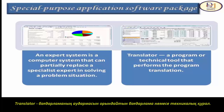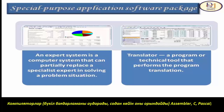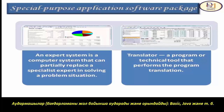Translators are programs or technical tools that perform program translation. Compilers translate the entire program and produce executables — examples include Assembler, C, and Pascal. Interpreters translate and execute the program line by line — examples include Basic and Java.